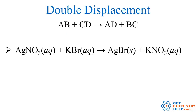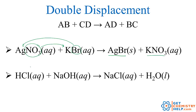In a double displacement, this happens twice. Notice: silver nitrate plus potassium bromide goes to silver bromide and potassium nitrate. The bromide was with potassium and it moved over with the silver to make silver bromide. The nitrate was with the silver and it moved over with potassium to make potassium nitrate. So two different things were displaced. Another specialized type of double displacement is an acid plus a base. Here we have hydrochloric acid combining with sodium hydroxide to produce sodium chloride and water. The hydroxide was with sodium, then it combined with the H+ in hydrochloric acid to make water. The chloride was with the hydrochloric acid and it went over to combine with the sodium to make sodium chloride — two things were displaced, so that's a double displacement.